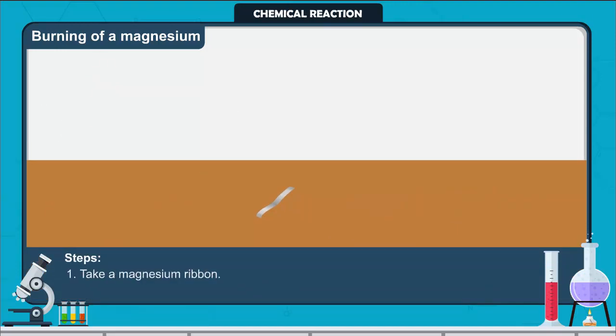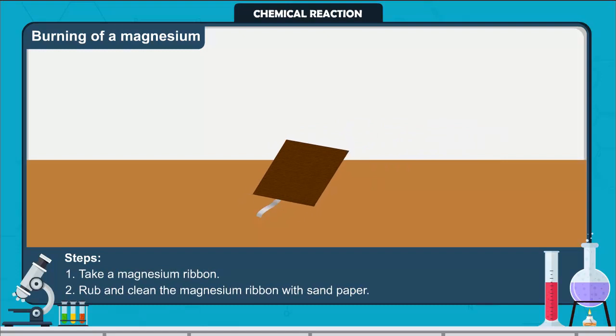Follow these steps. Take a magnesium ribbon. Rub and clean the magnesium ribbon with sand paper. This is done to remove the protective layer of basic magnesium carbonate from the surface of the magnesium ribbon.